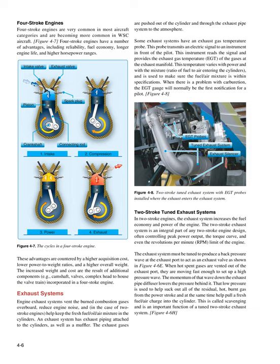Exhaust systems vent the burned combustion gases overboard, reduce engine noise, and, in the case of two-stroke engines, help keep the fresh fuel/oil/air mixture in the cylinders. An exhaust system has exhaust piping attached to the cylinders as well as a muffler. Some exhaust systems have an exhaust gas temperature (EGT) probe that transmits an electric signal to an instrument in front of the pilot. The EGT varies with power and with the mixture ratio of fuel-to-air entering the cylinders and is used to ensure the fuel/air mixture is within specifications. When there is a problem with carburetion, the EGT gauge will normally be the first notification for a pilot.